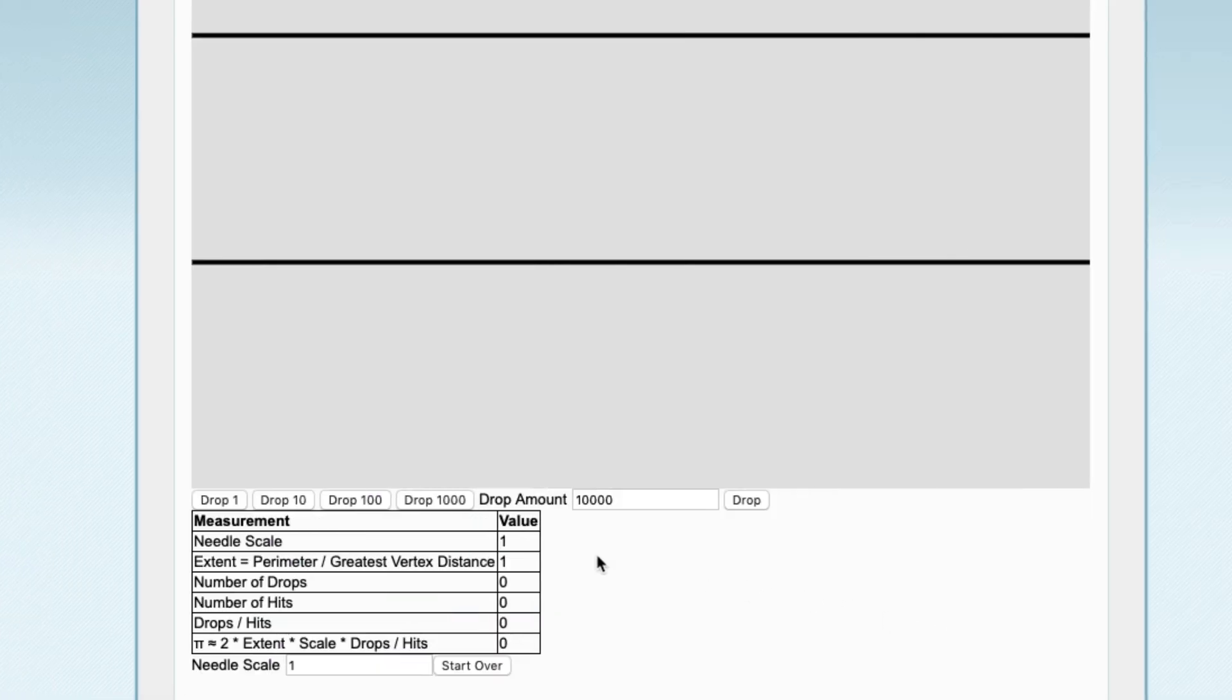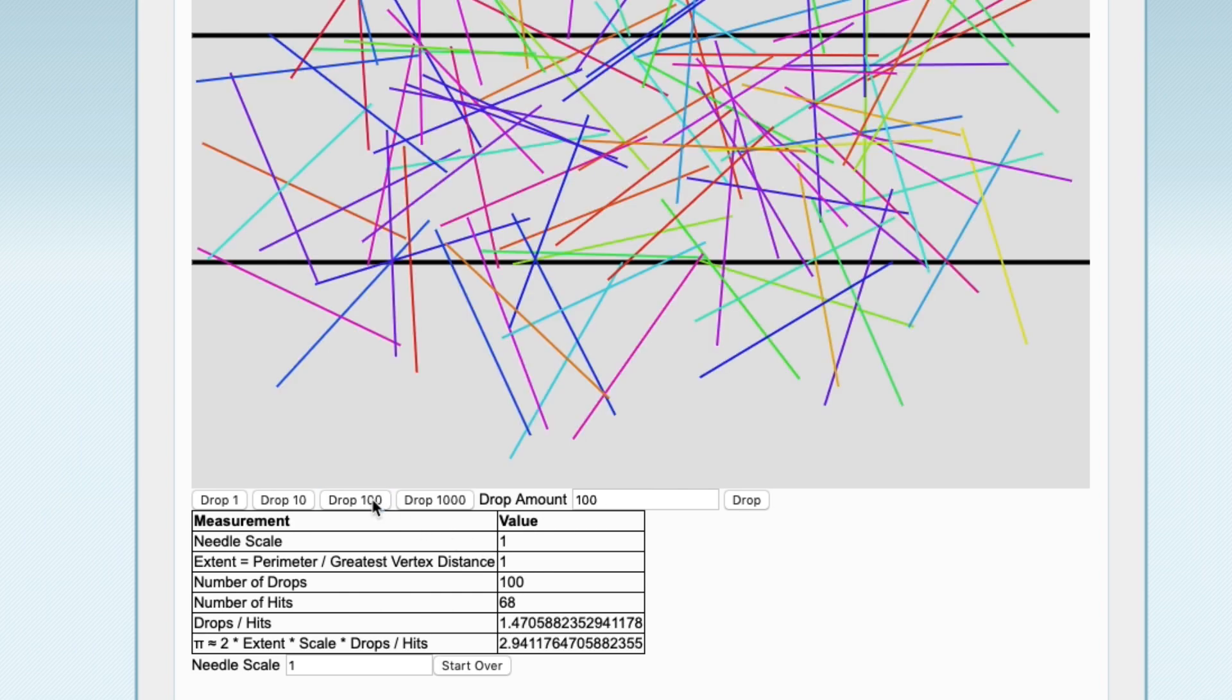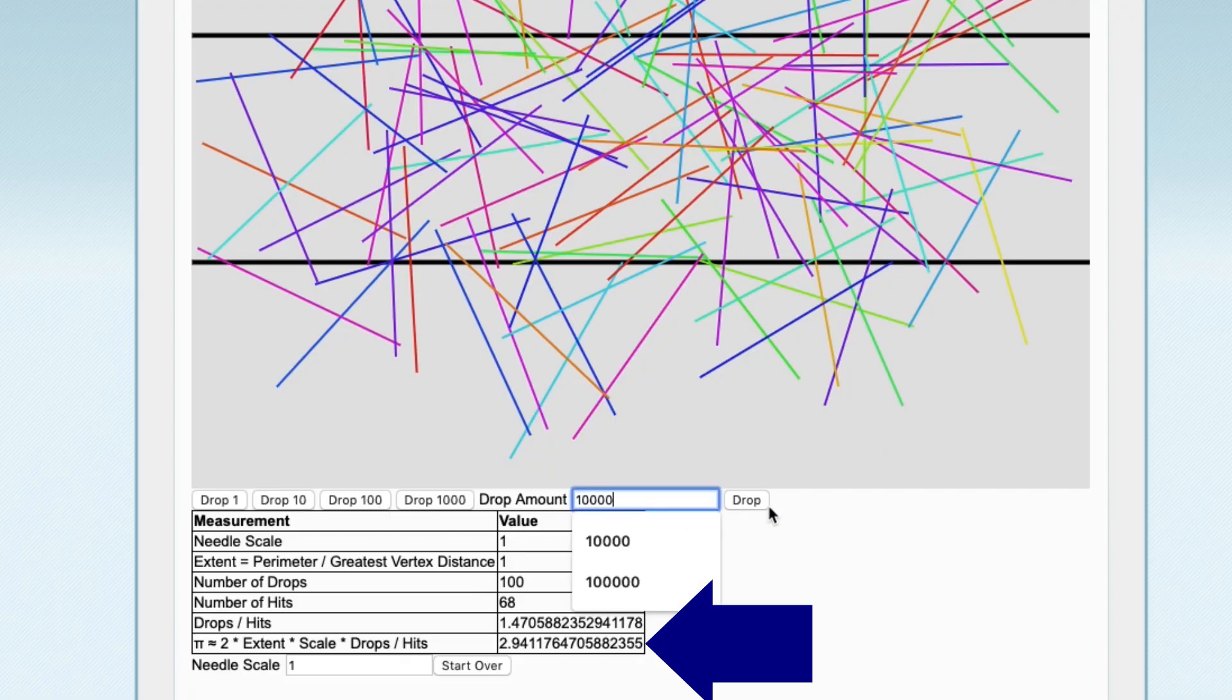I found an online simulation as well, and if we drop maybe 100 needles, the calculated ratio, which ideally would be pi, is actually a little under 3. But if we drop several more, it won't be perfect, but that ratio will get closer and closer to pi.